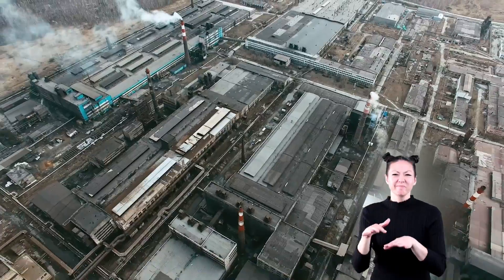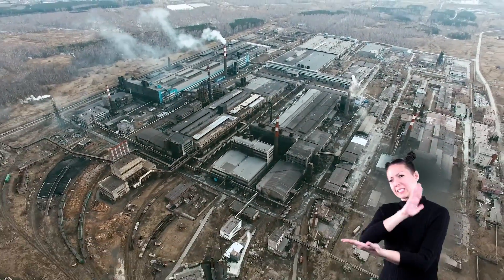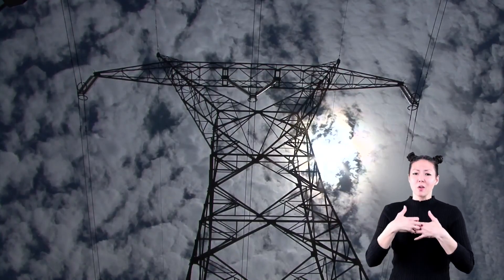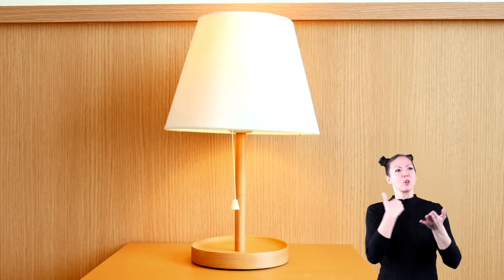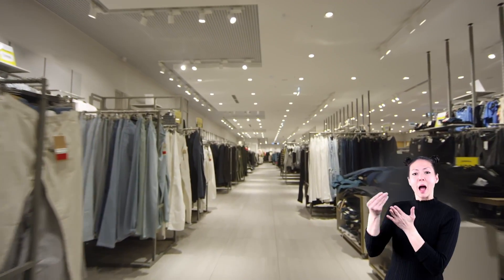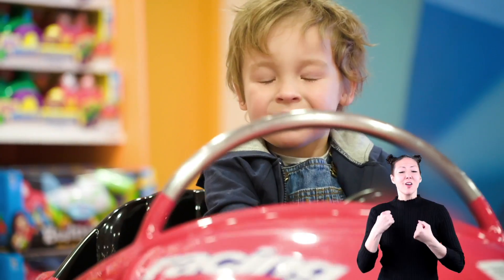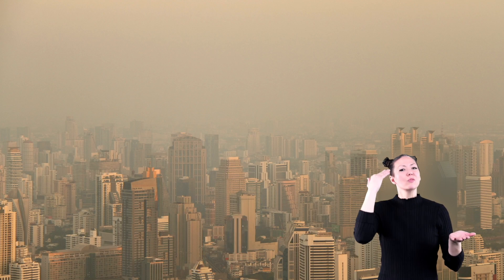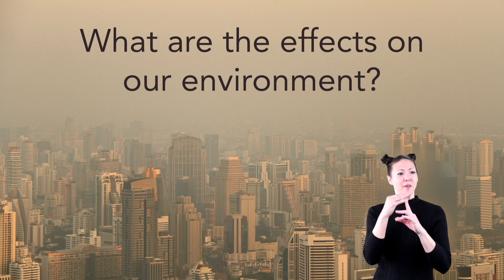You might think that we should shut all of those factories down so they'll stop polluting our air. However, factories produce electricity, which gives us light and power that we use every day. And most things we buy from factories — like our clothes, our food, our toys and cars — come from them too. Now that we know what air pollution is, what are some of the effects of air pollution on our environment?